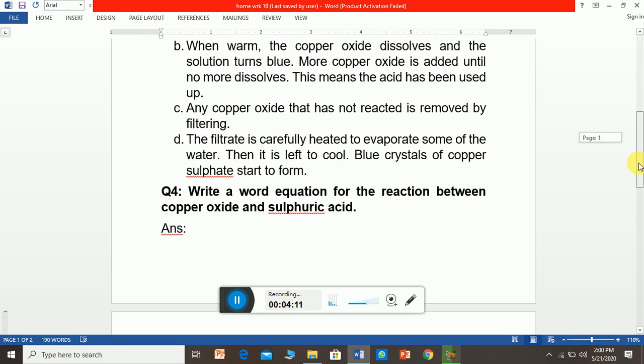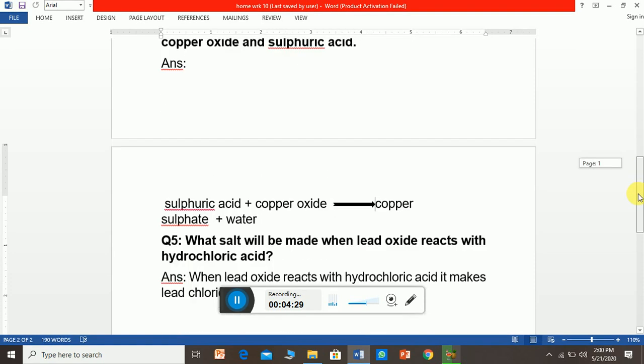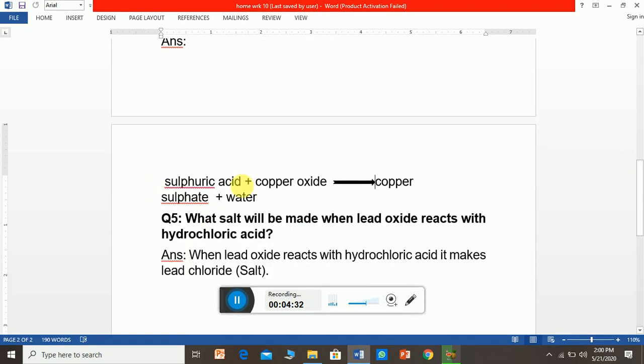The fourth question: Write the word equation for the reaction between copper oxide and sulfuric acid. Whenever sulfuric acid reacts with copper oxide, it gives us copper sulfate and water. On the left side we have reactants: one is acid and another is metal oxide. Whenever acid reacts with metal oxide, it gives us metal salt and water.